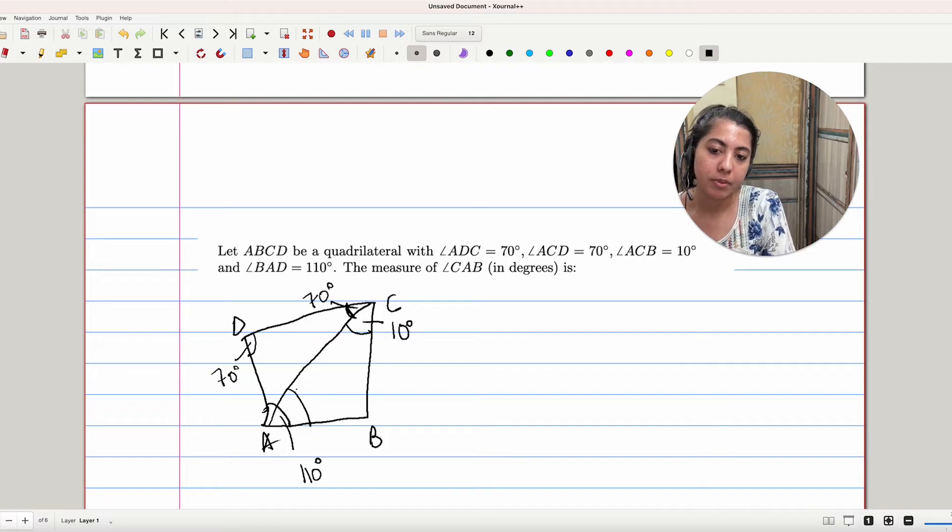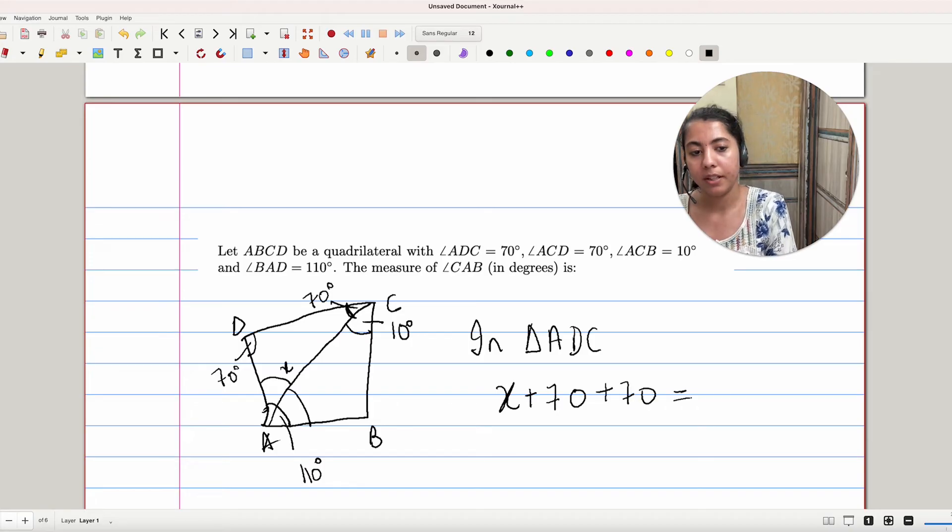Let's assume that angle CAD is X. Here we can apply the angle sum property in triangle ADC. X plus 70 plus 70 degrees is equal to 180 degrees.